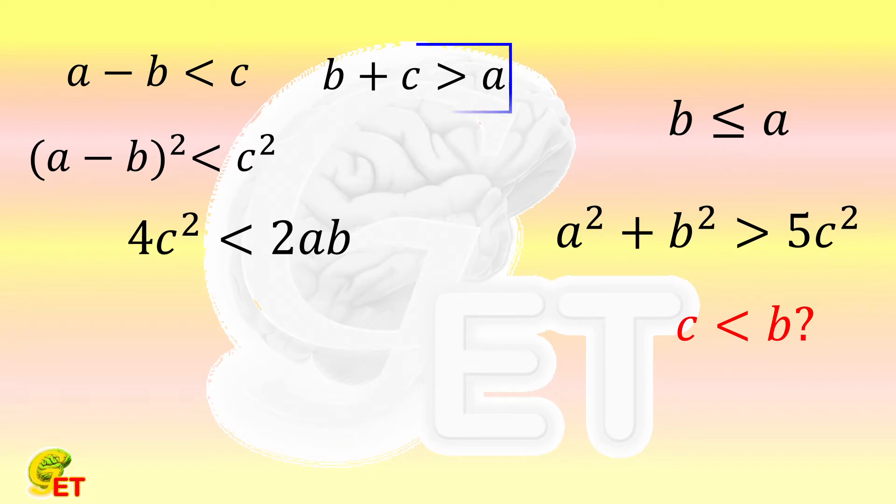Now we are going to use the other condition that the summation of b and c is bigger than a. We replace a in the existing conclusion with b + c, the direction of the inequality sign remains unchanged. We therefore get, 4c² < 2(b + c)b.